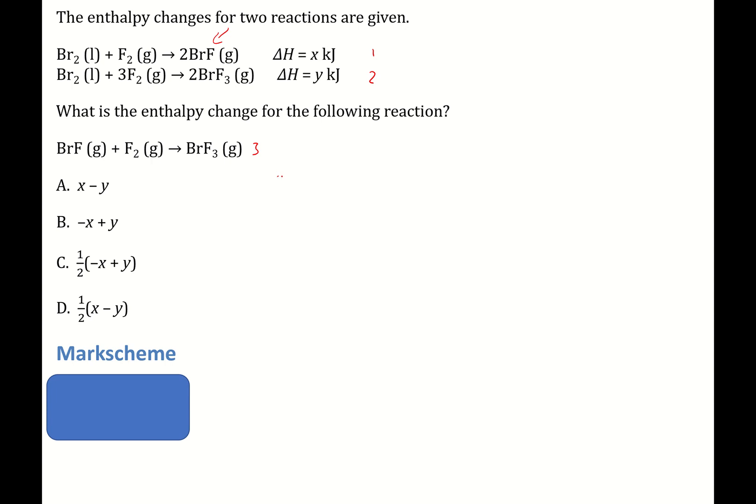So I'm going to write down 2BrF goes to Br₂ plus F₂. Now, because I've flipped it, the delta H value now becomes minus x, because it's going in the opposite direction.